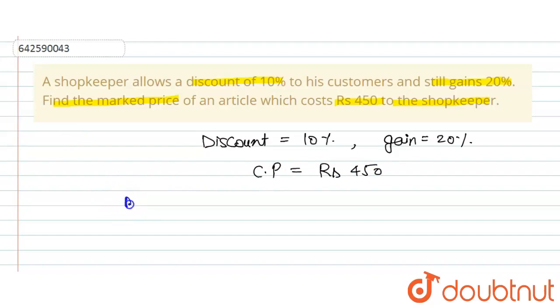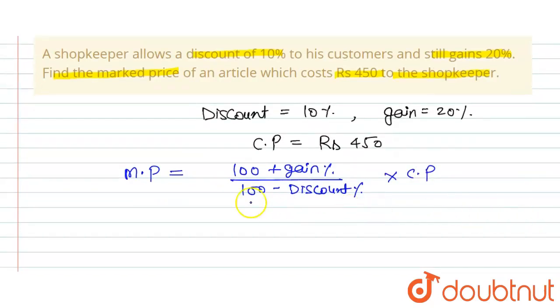So as we know that, my dear student, for calculating the marked price, there is a very important formula. The marked price MP is equal to 100 plus gain percent upon 100 minus discount percent, into CP. Okay, so we will use this formula.